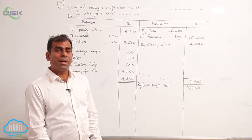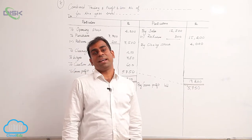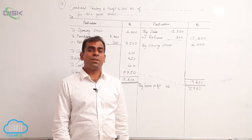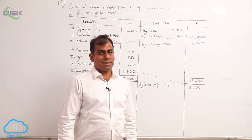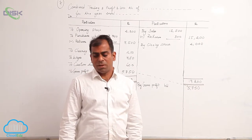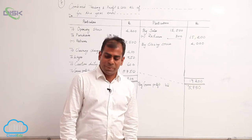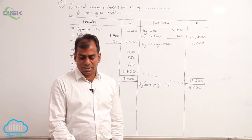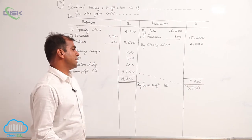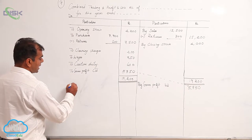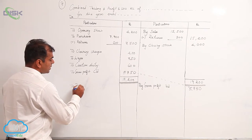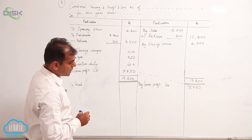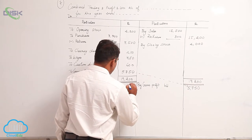Now let us see the leftover items which you have not underlined. The leftover items are indirect expenses and incomes, so we will enter them in our P&L account from top. After purchases, rent is our first indirect expense. On the debit side, I am going to write rent rupees 650.